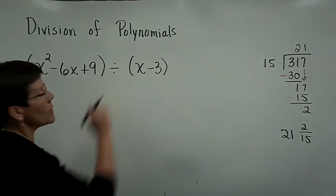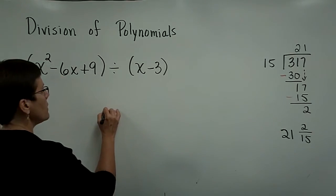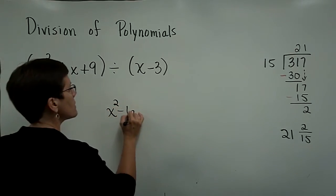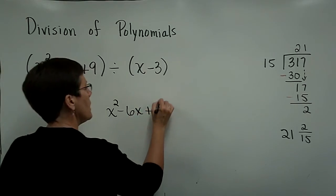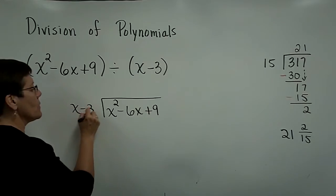We're going to do this polynomial, this problem, much the same way. So we're going to take the x squared minus 6x plus 9, and we're going to long divide it by, if you will, by x minus 3.